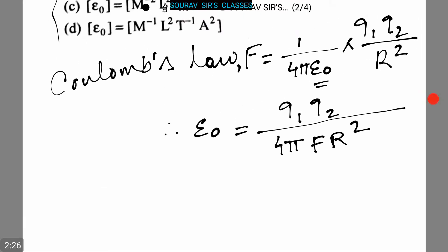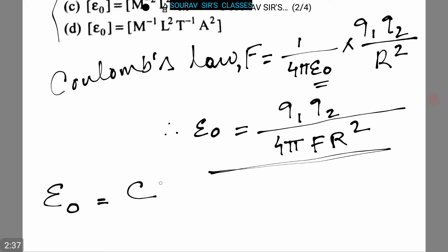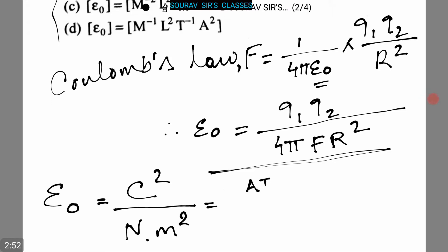Now by substituting units, we can rewrite this as E0 = C² / (N × m²). Now putting the dimensions, we can write E0 = (A·T)² divided by ...